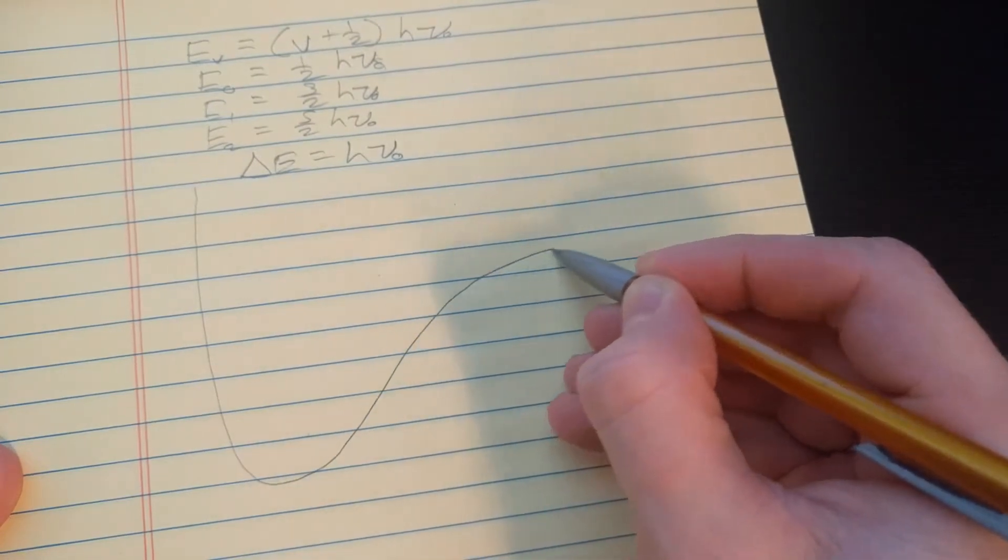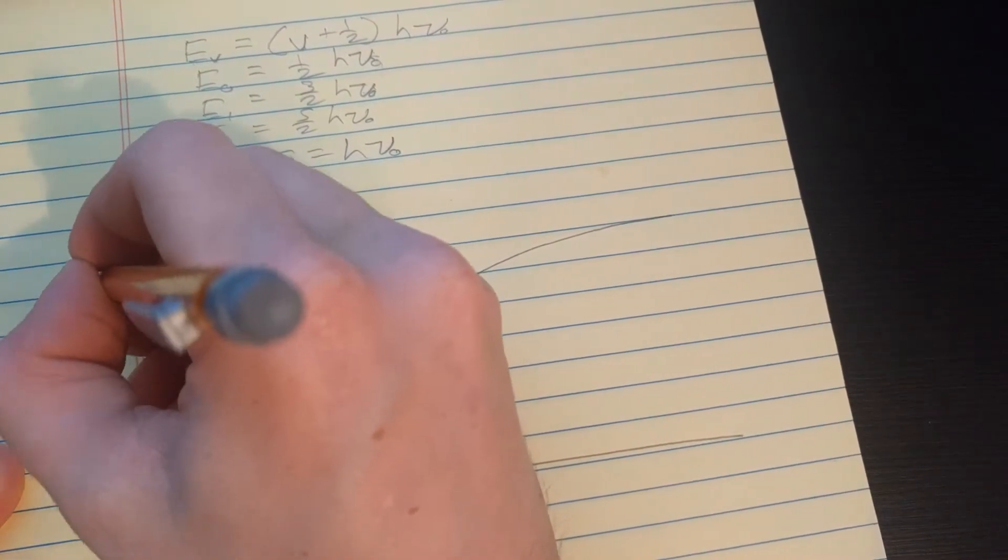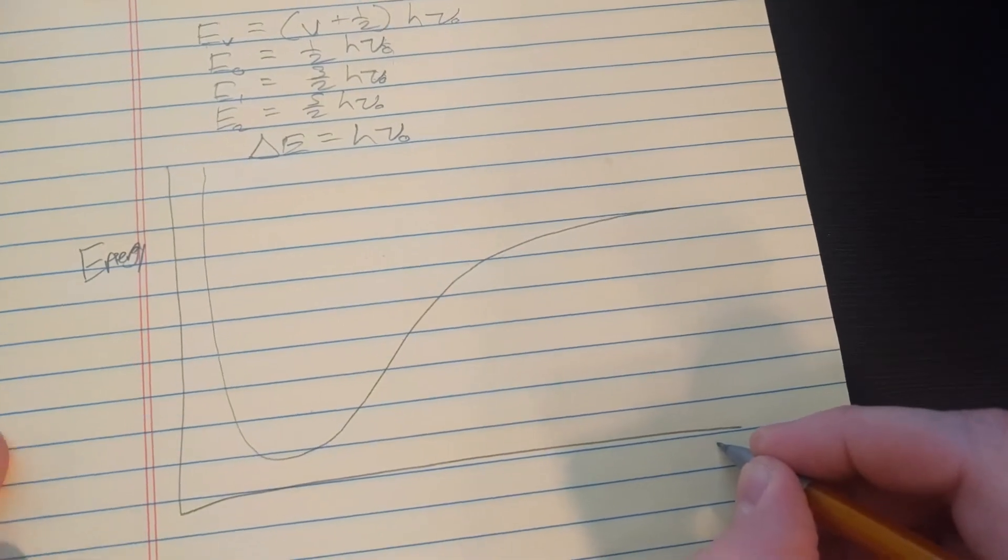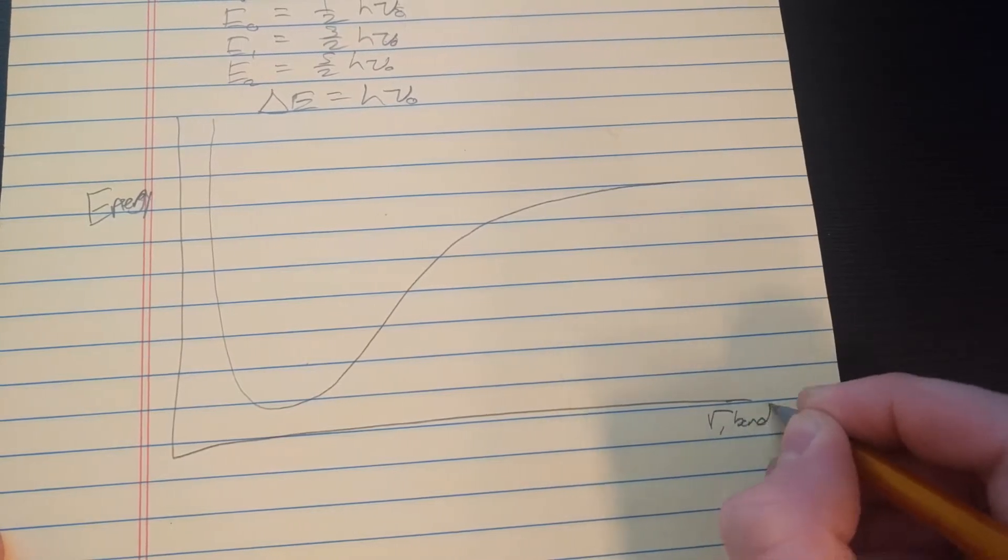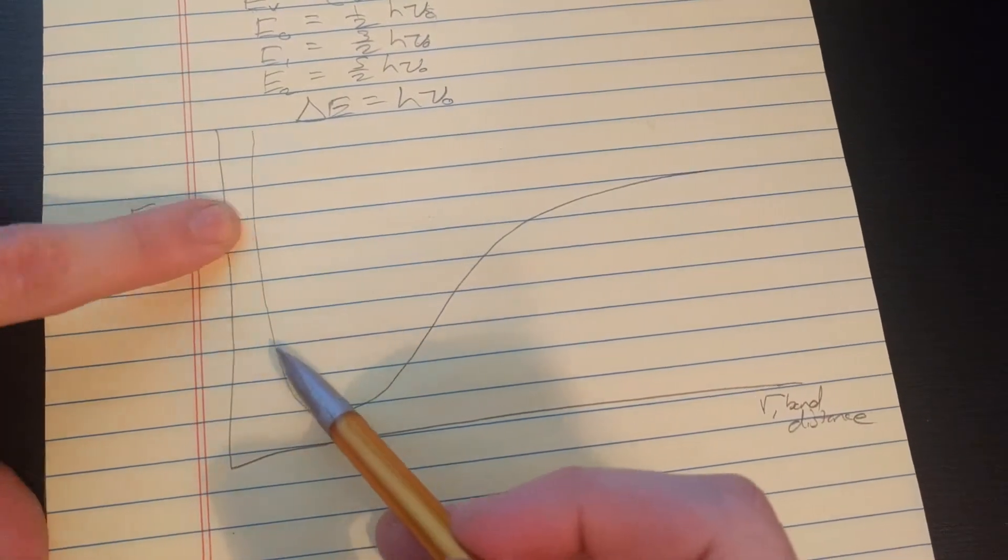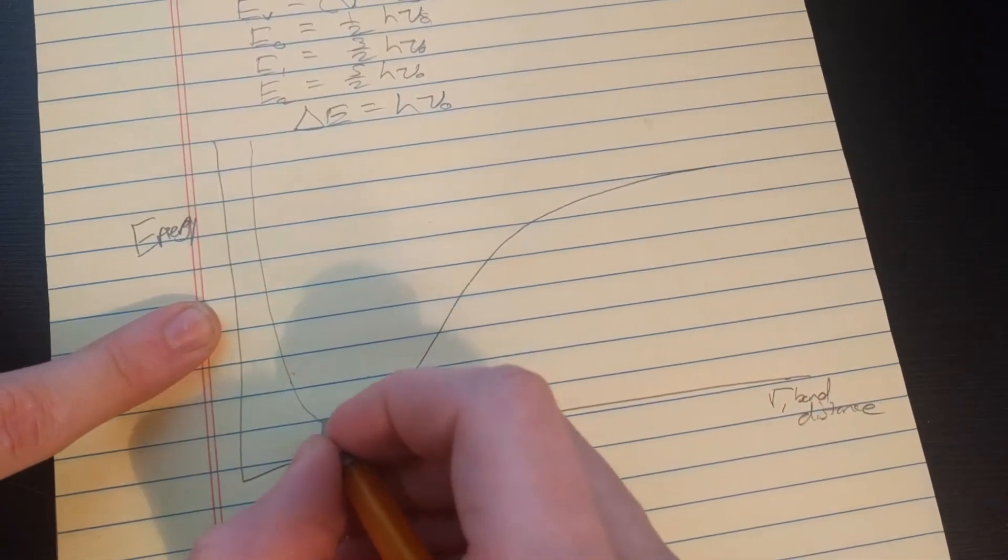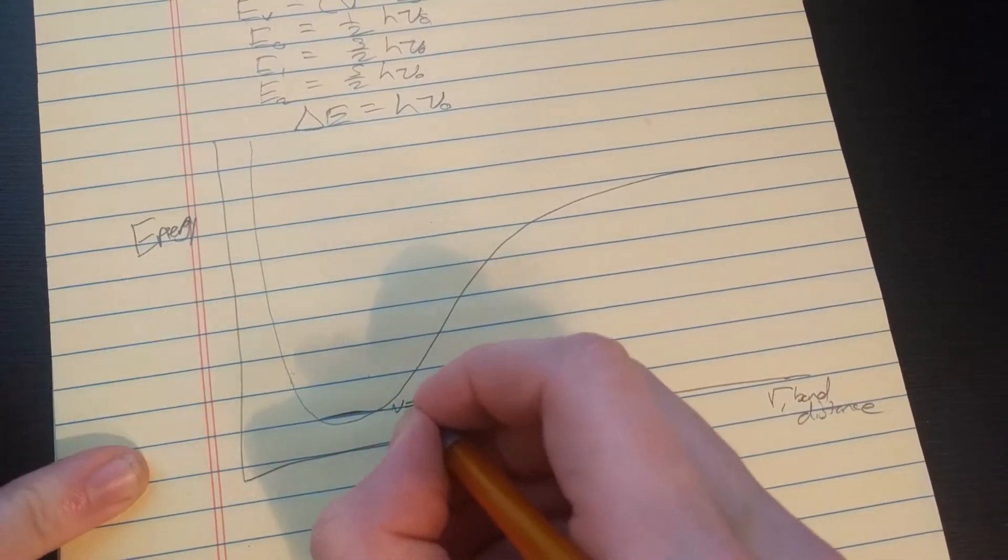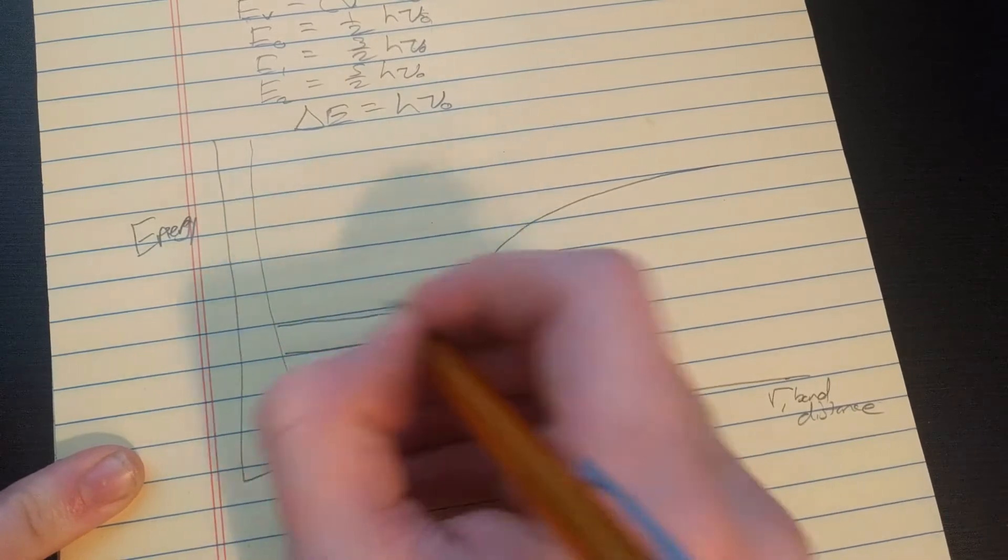And, if you think of a potential energy well, which is shaped like that, where you have your energy on the y-axis, and you have the bond distance on this axis, let's call the bond distance R, bond distance. So, this would be an electronic potential energy well. And, I've discussed it in previous videos. Now, down here, we might have v equals zero. Here, we would have v equals one. Here, v equals two. So on and so forth.